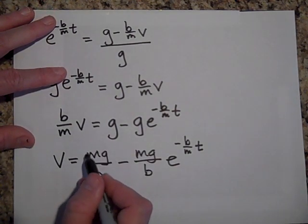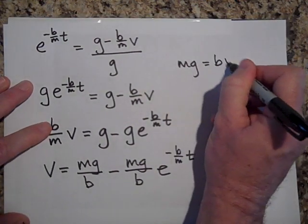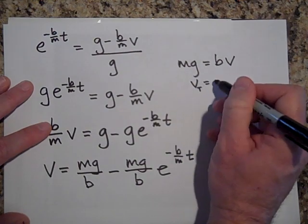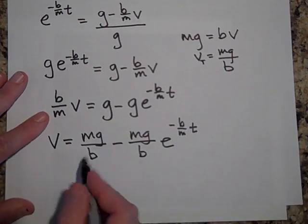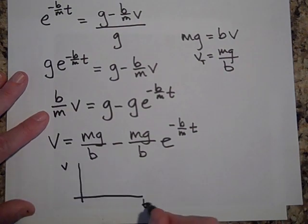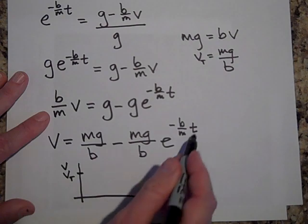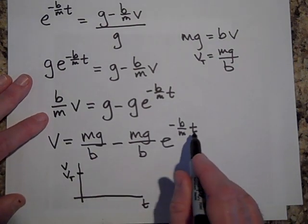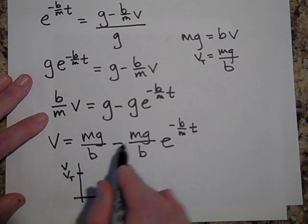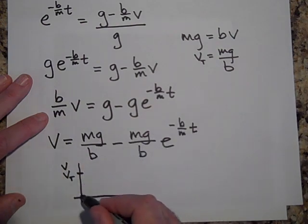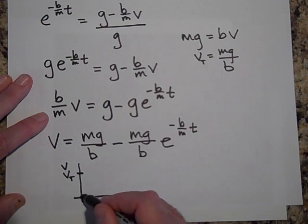This is our terminal velocity — when mg equals bv we're at terminal velocity, so v-terminal is mg over b. This term is v-terminal. If you graph this equation, you're taking the constant mg/b and subtracting something that decays with time. At t equals zero this whole exponential term equals one, so you're subtracting mg/b — giving zero — but as time goes on that term decays and velocity grows up to terminal velocity.